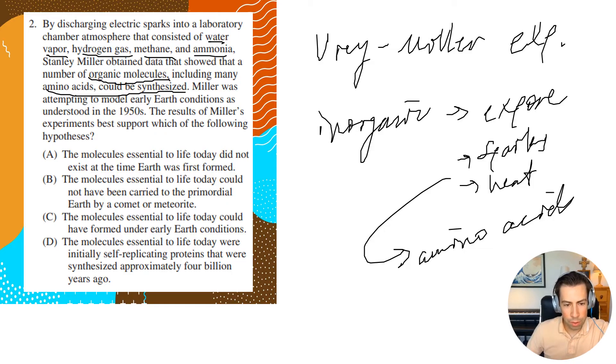So let's go ahead and read the rest of the question. Miller was attempting to model early earth conditions as understood in the 1950s. The results of Miller's experiment best support which of the following hypotheses? So to summarize that experiment, inorganic molecules, when you expose them to the correct conditions, can produce amino acids. And the traditional interpretation of this is that you can get life from basically non-life under the correct conditions. So let's go ahead and see if there's any answer choice that best suits that.